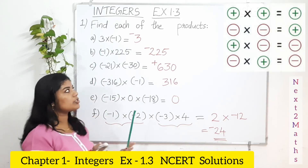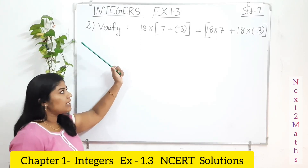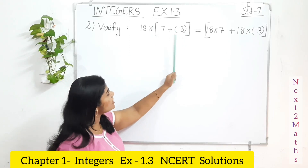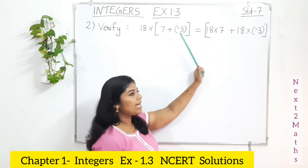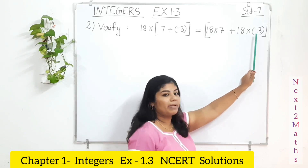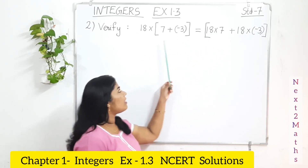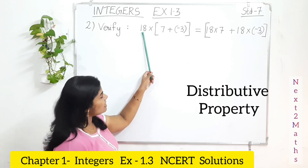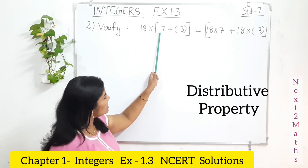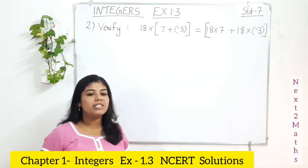Now we studied some problems to find the product — that is, the multiplication. Question number 2: verify the problem. 18 multiplied by (7 + negative 3). On the LHS side we have this, and on the RHS side: 18 multiplied with 7, plus 18 multiplied with negative 3. Do you remember what property this is? 18 is distributed to both terms — this is the distributive property.